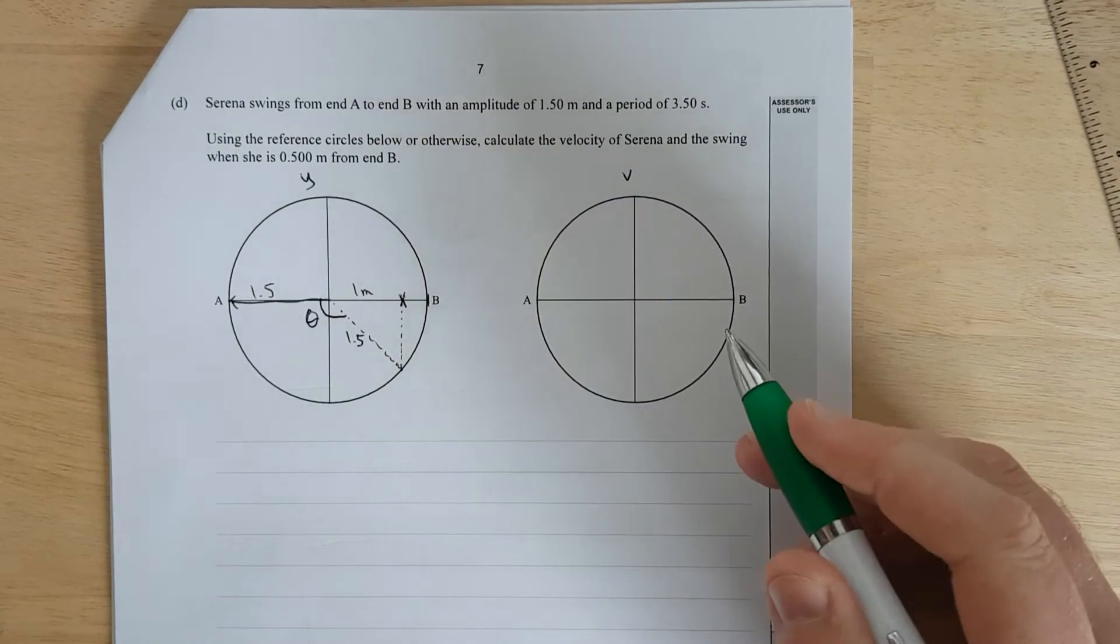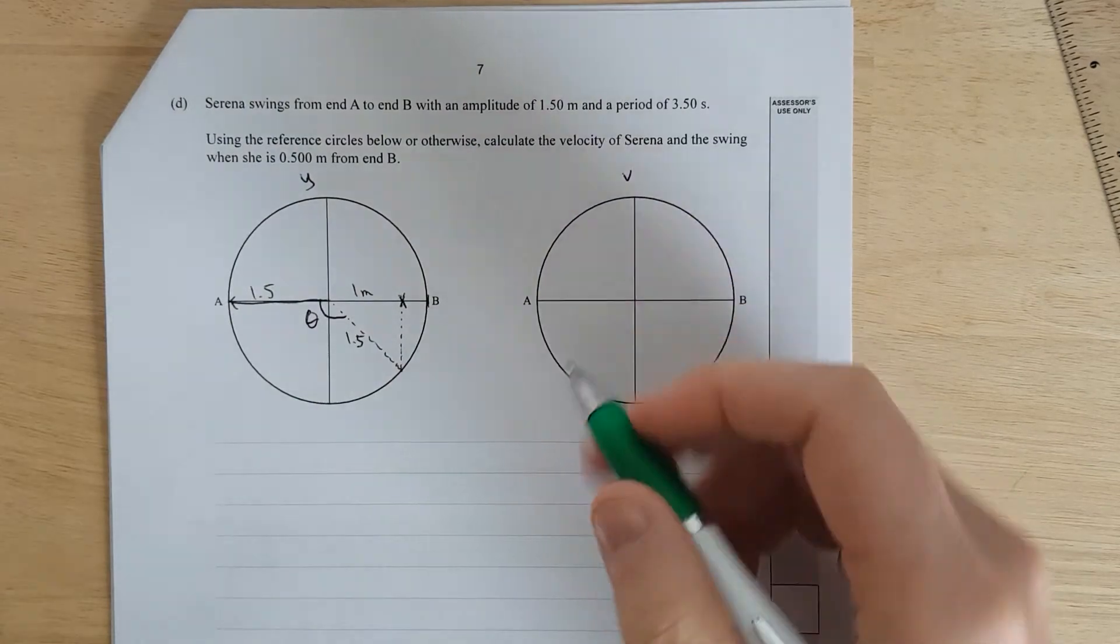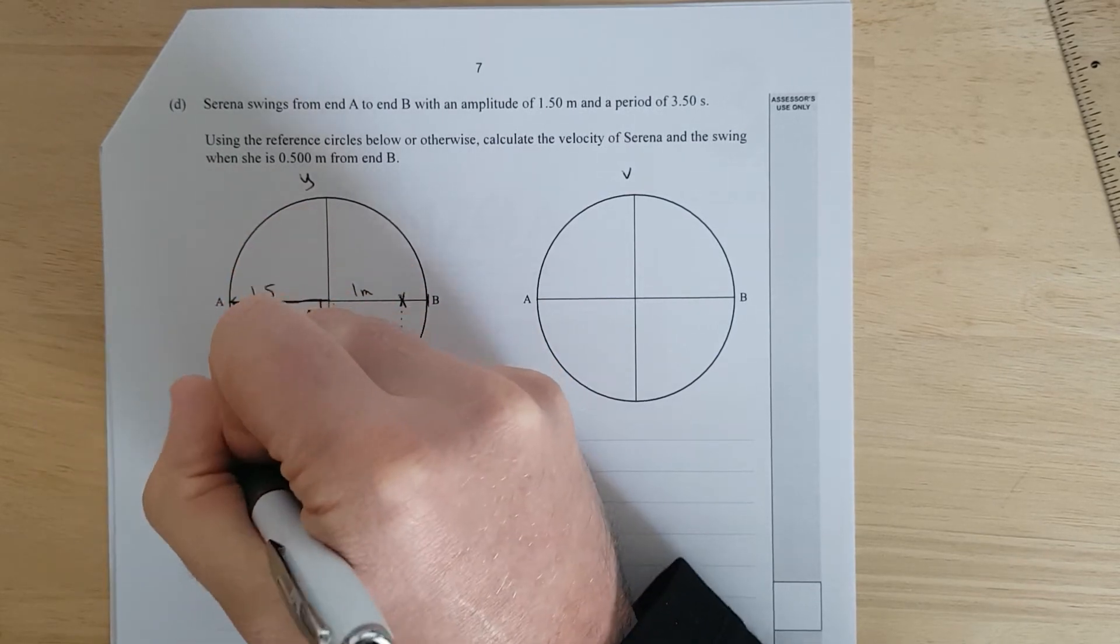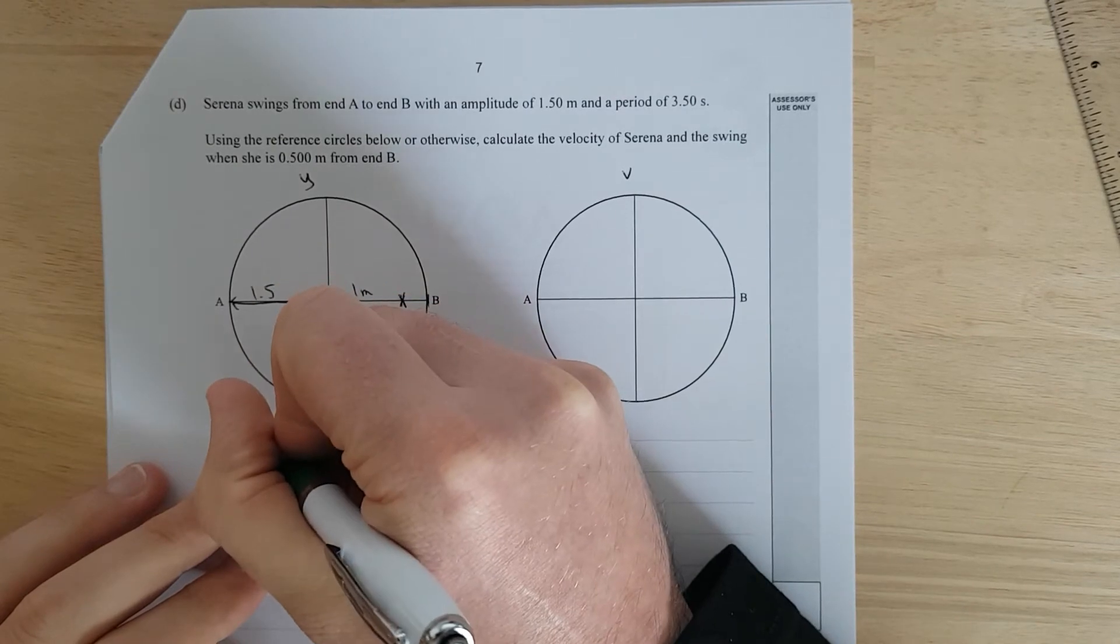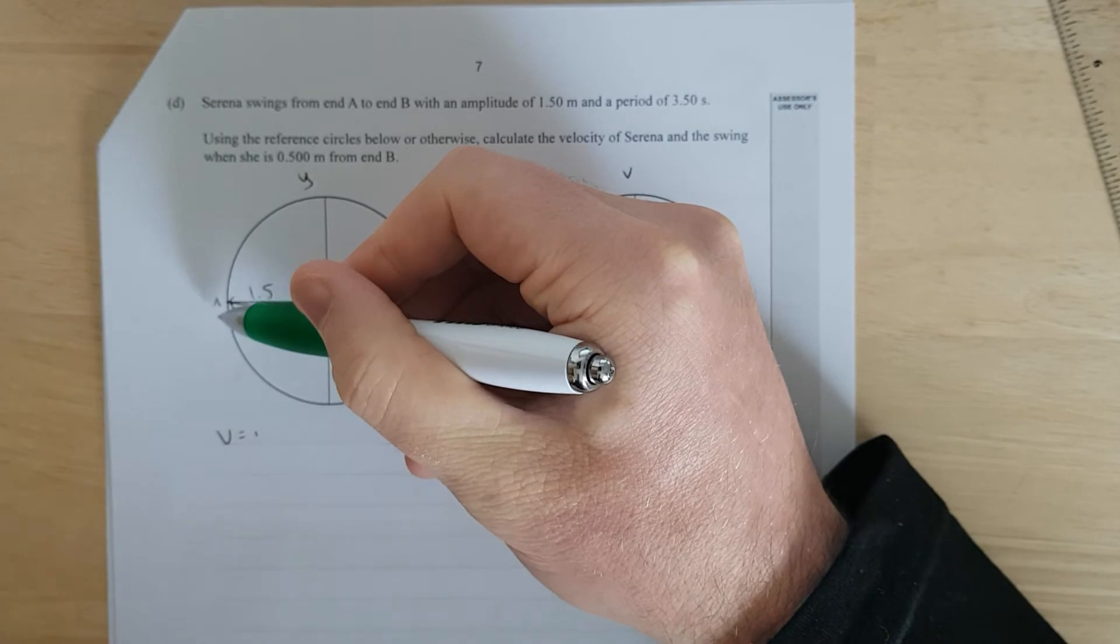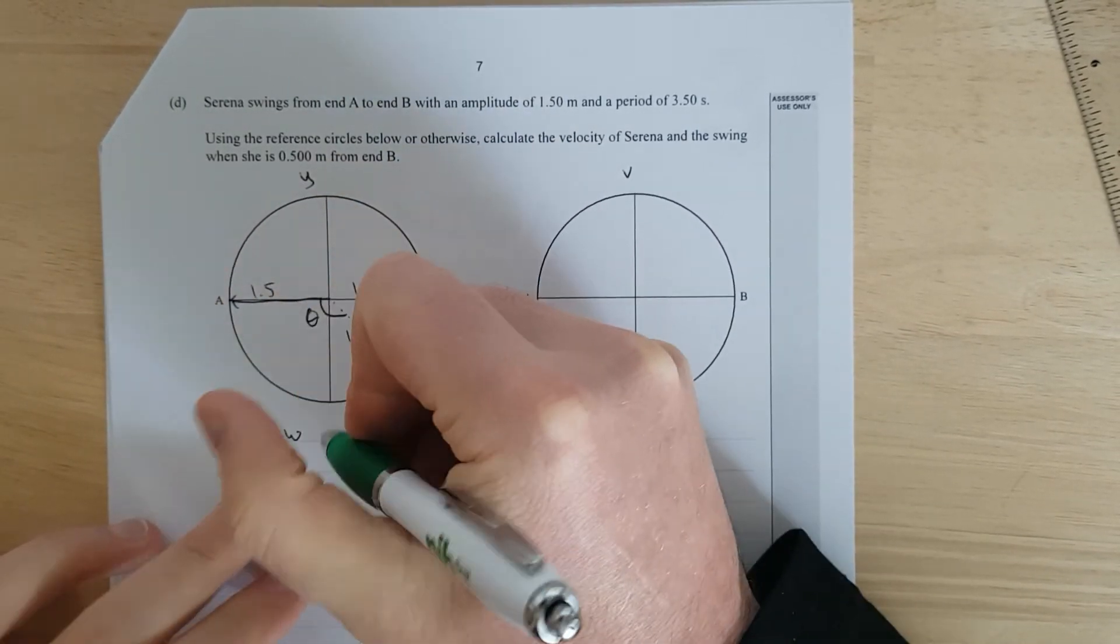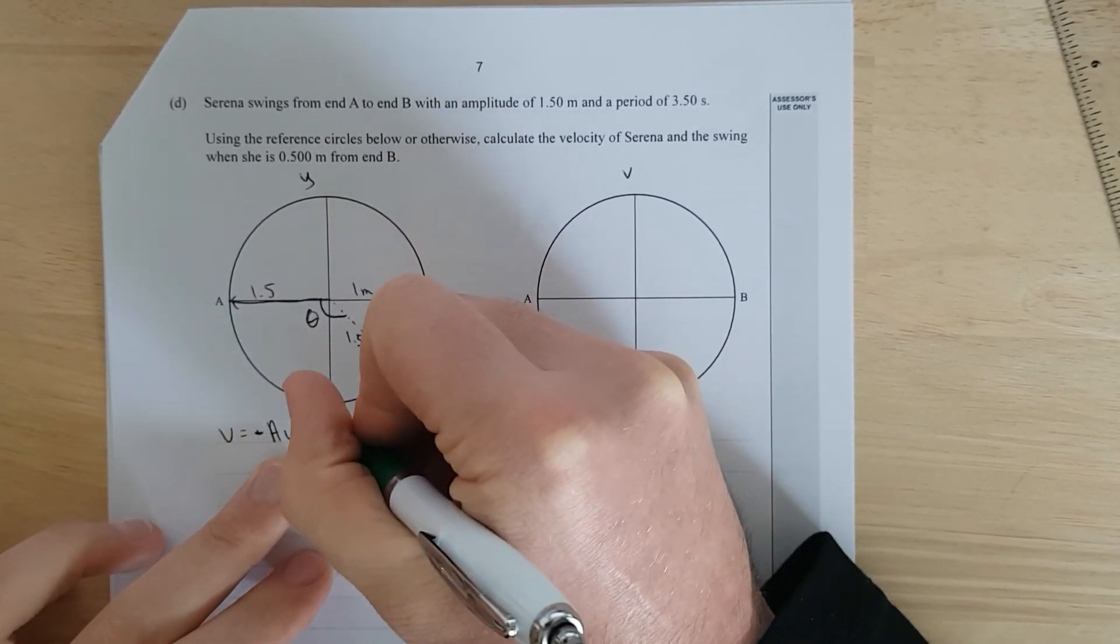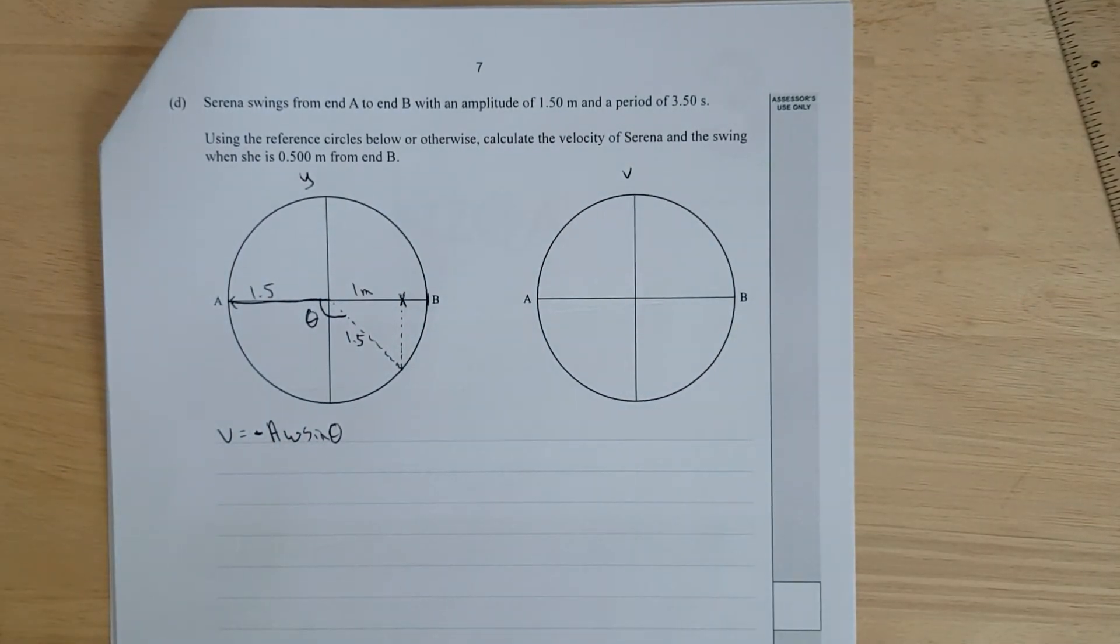If I can find that theta, I can find what the angular velocity is. And the angular velocity, we're going to start at maximum. So, it's going to be cos to sine. So, it's going to be V is equal to omega. Wait, hold on. This is starting at the top. So, it's going to be cos. Differential of cos is negative sine. So, it's going to be negative A, omega, start at sine theta. There we go.